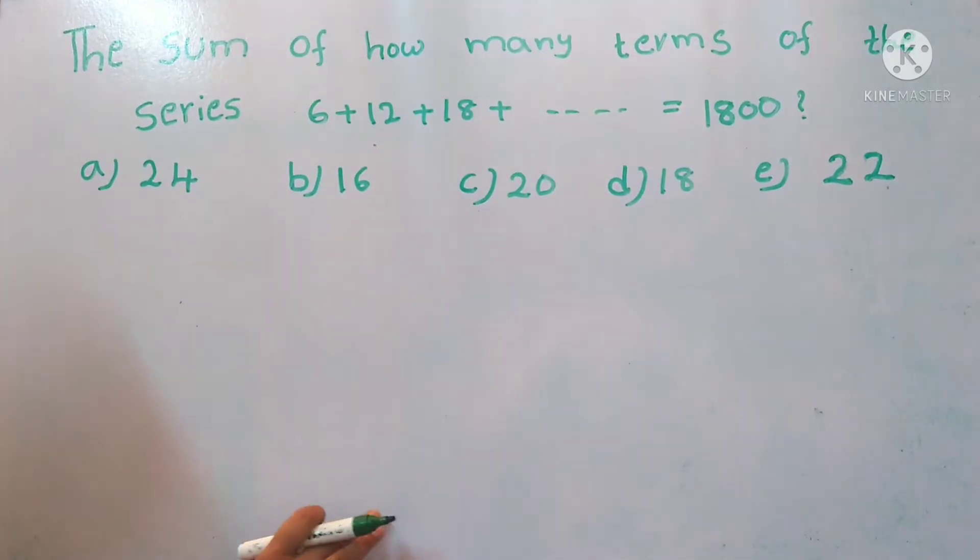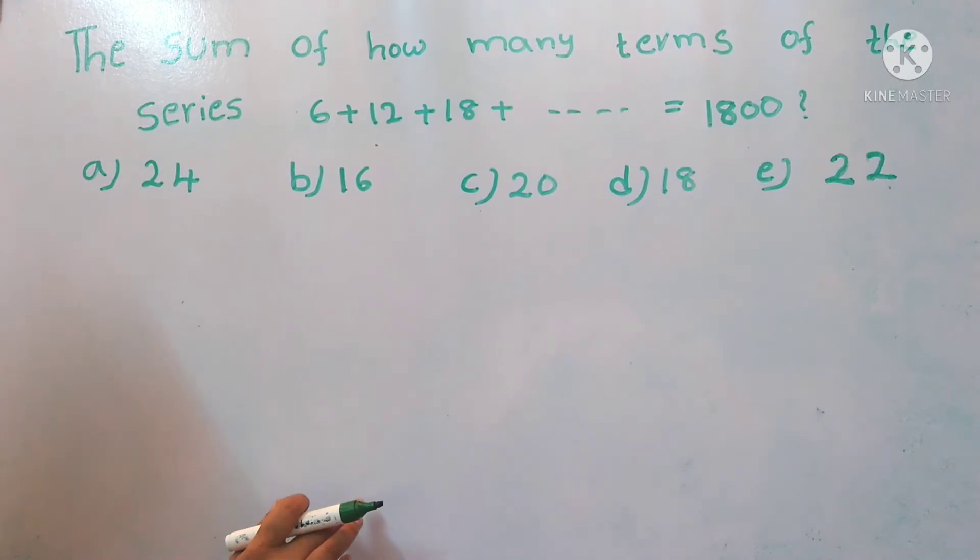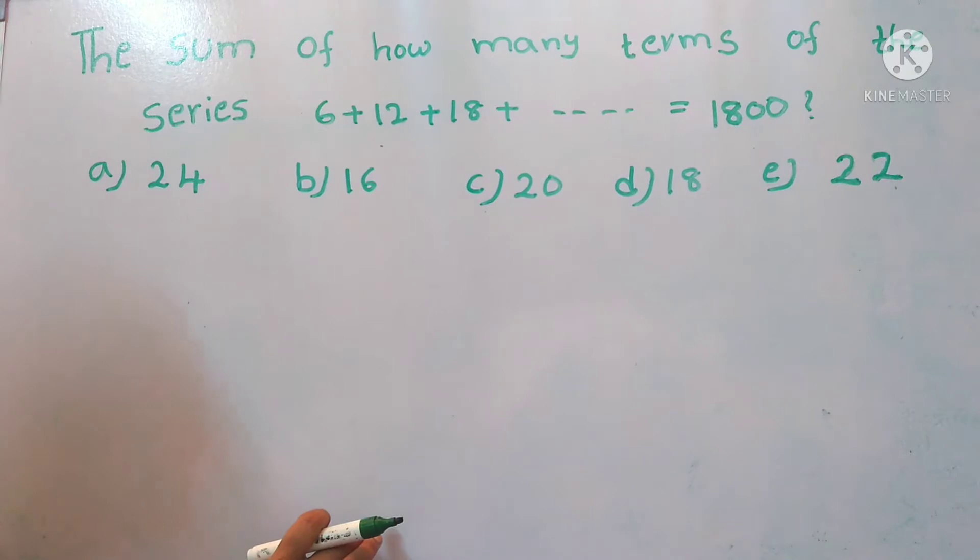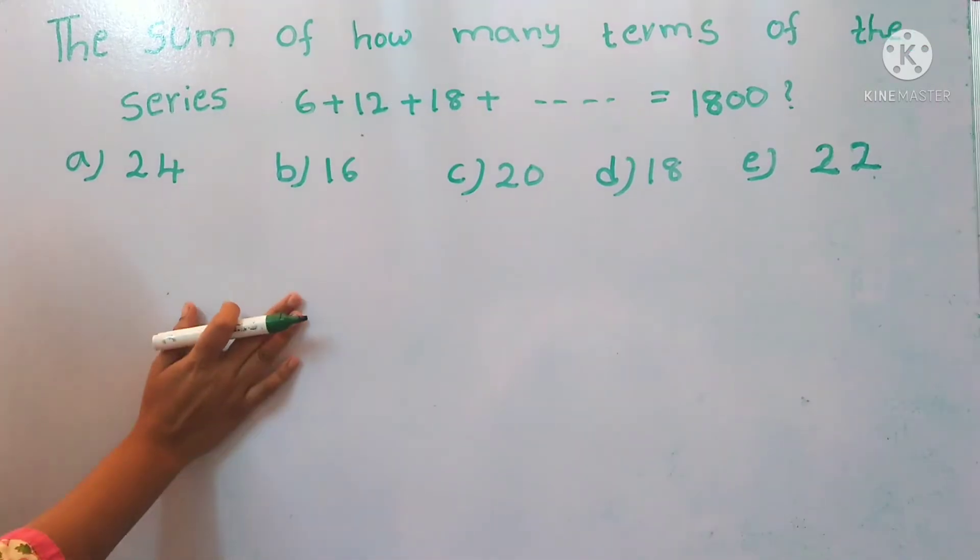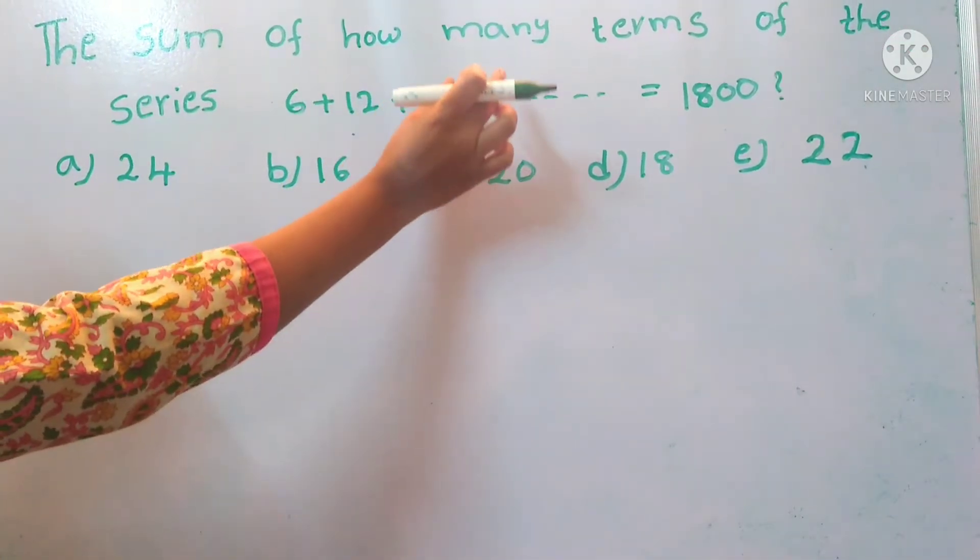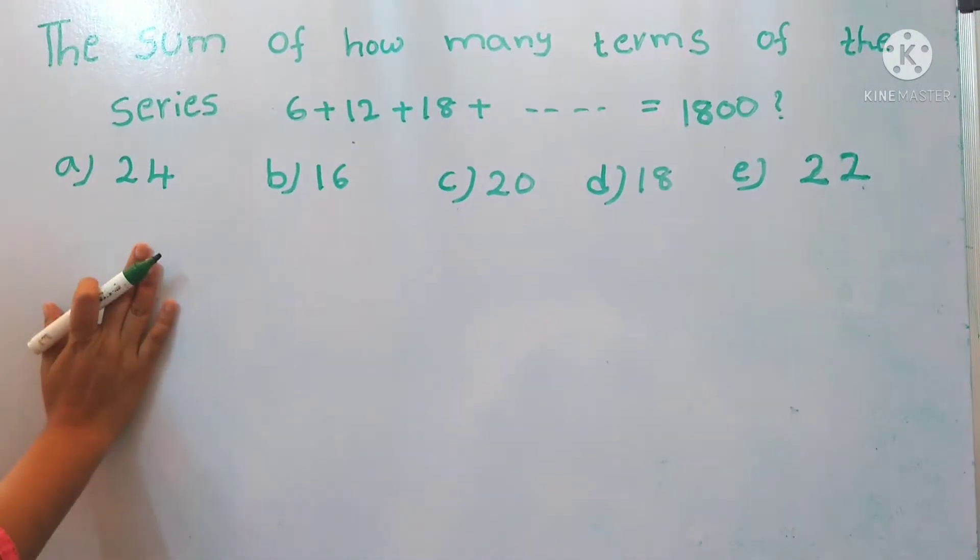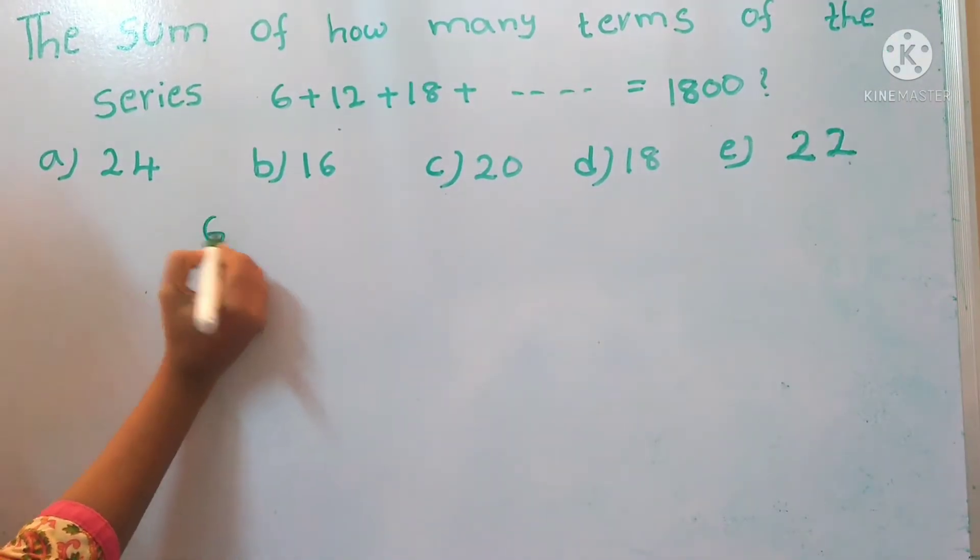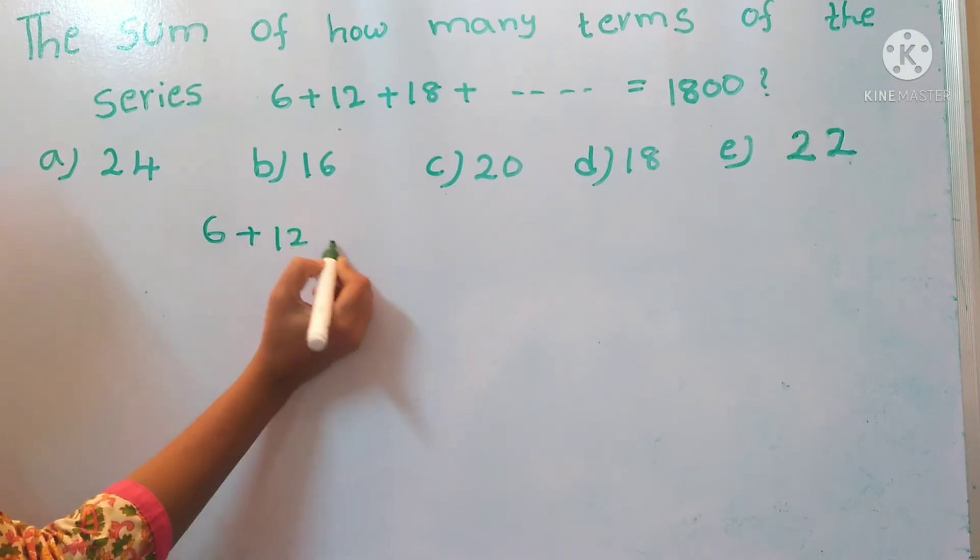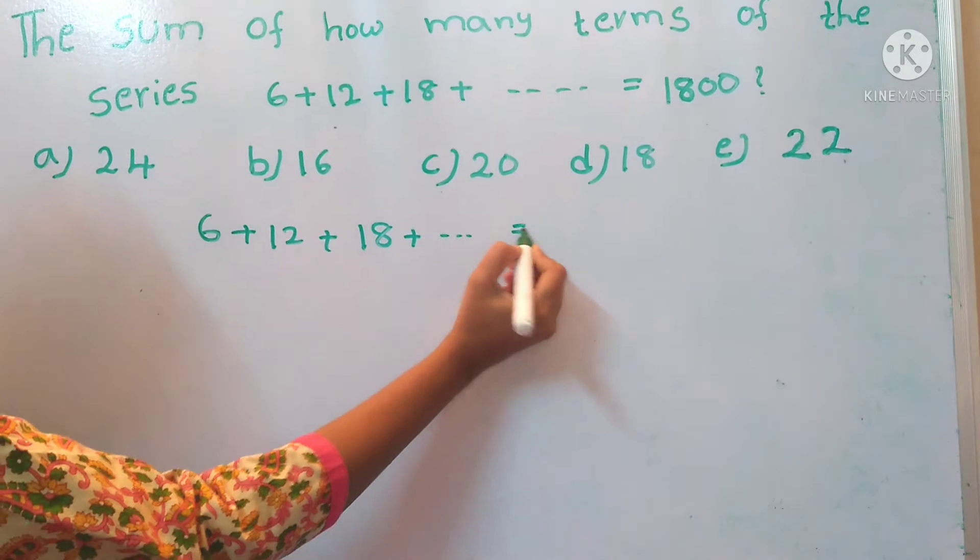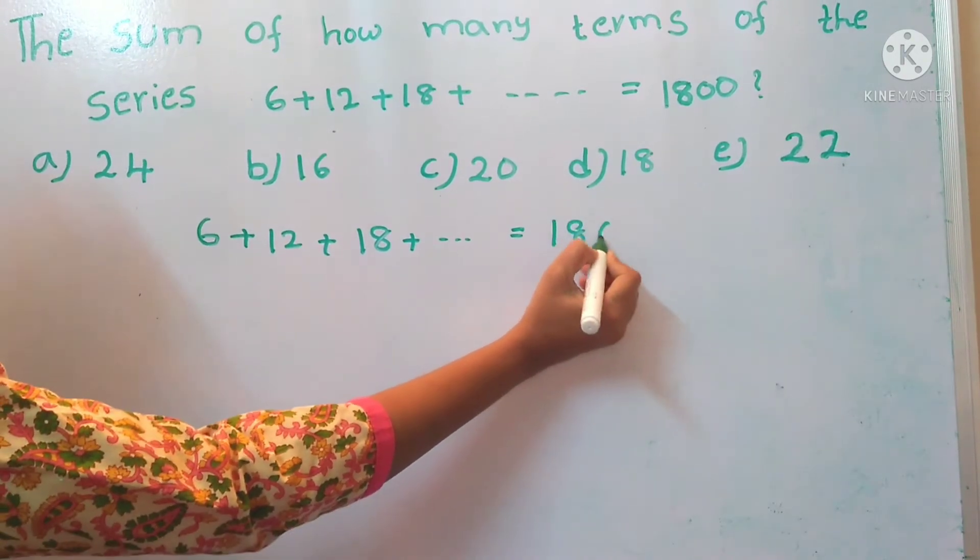Hi, in this video I am going to explain an important question in the number system. It is very important in competitive exams. Here the question is: the sum of how many terms of the series 6 + 12 + 18 + ... equals 1800?